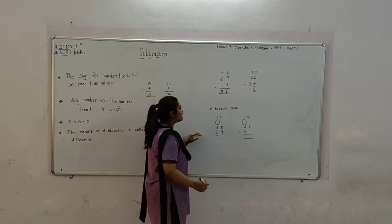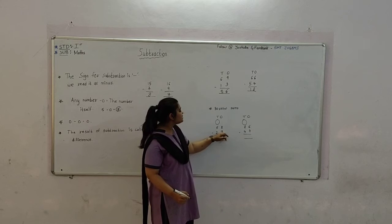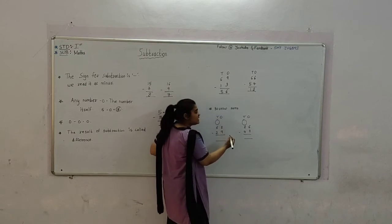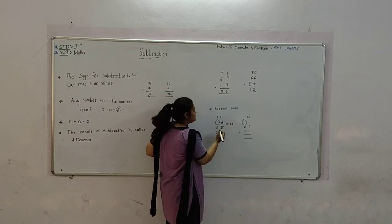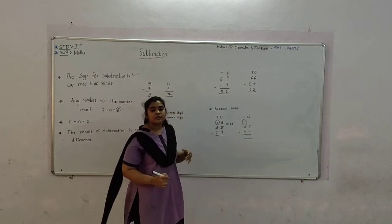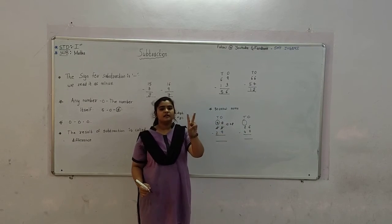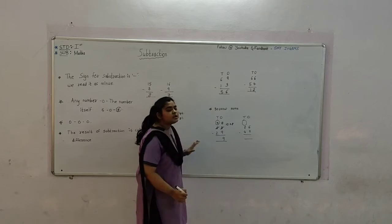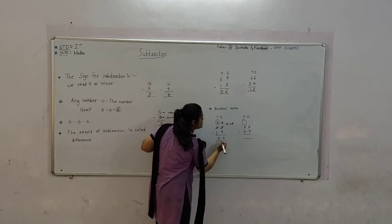Now let's start from this problem. We always start from the 1s place. Here, 9 in your mind and count up to 8 — this is not possible. So we have to borrow 10 from the 10s place. 10 plus 8 is 18. Keep 9 in your mind and count up to 18: 9, then 10, 11, 12, 13, 14, 15, 16, 17, 18 — that is 9. Then keep 2 in your mind and count up to 5: after 2 is 3, 4, and 5. So 39 is the difference.